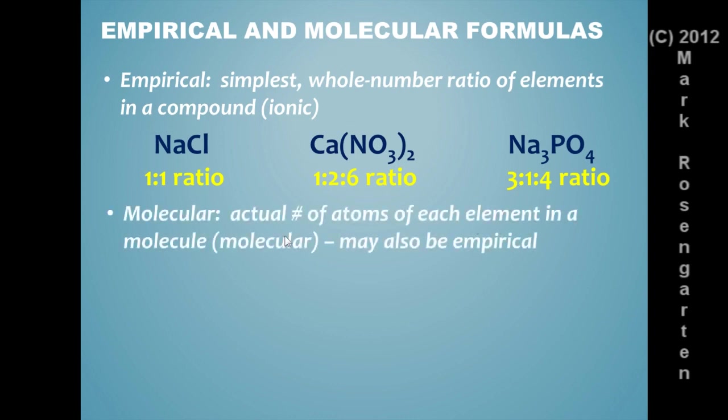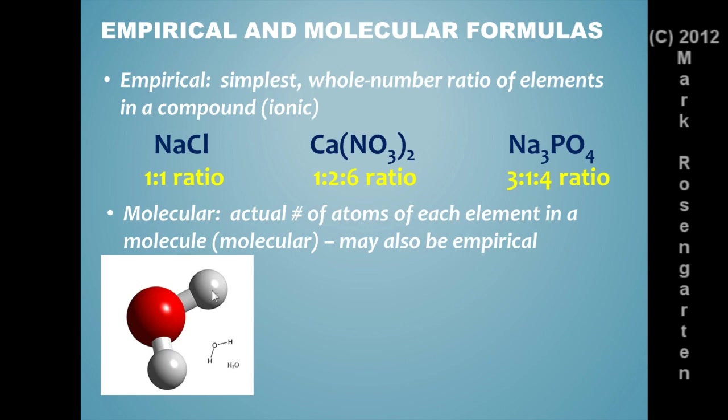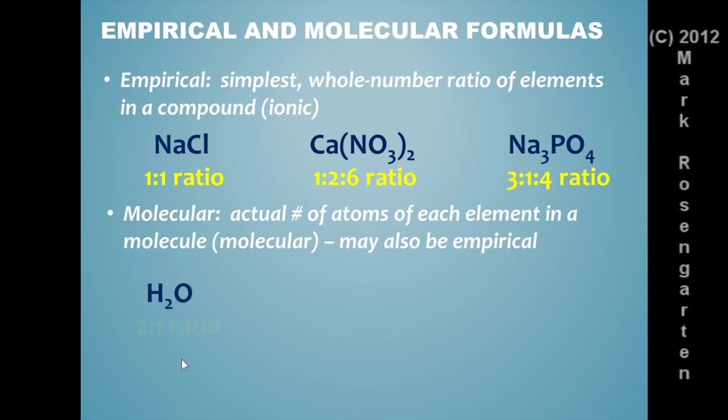For molecular formulas, this is the actual number of atoms of each element in a molecule, which is why they call it a molecular formula. It may also be an empirical formula. It may already be in the simplest whole number ratio. For example, water. H2O contains two hydrogens and one oxygen in each molecule. Now that is the molecular formula because that's the actual number of atoms in the molecule. But it also is a two-to-one ratio. So this molecular formula is also an empirical formula.